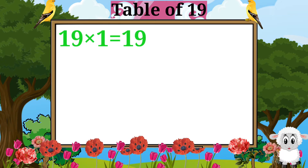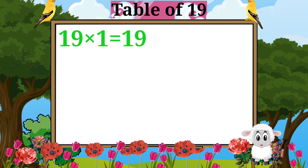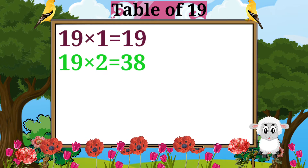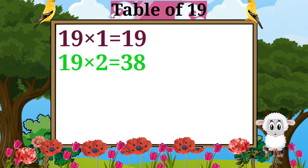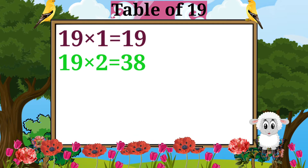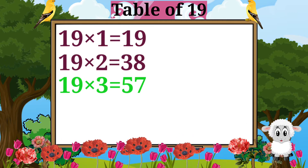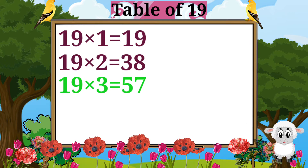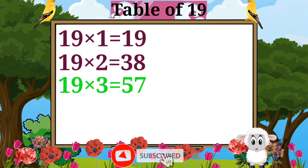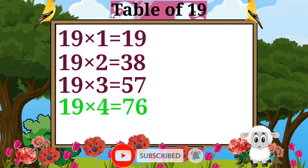19 ones are 19. 19 twos are 38. 19 threes are 57. 19 fours are 76.